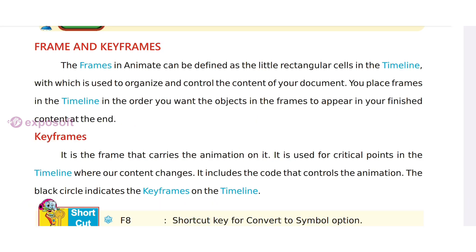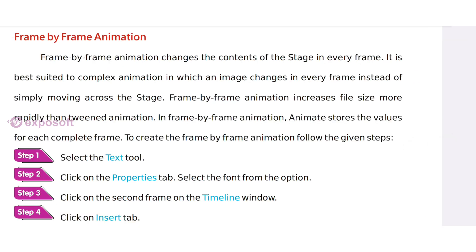Frames and keyframes: frames in Animate can be defined as the little rectangular cells in the timeline, which are used to organize and control the content of our document. A keyframe is a frame that carries the animation on it, used for critical points in the timeline wherever content changes.